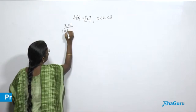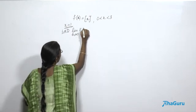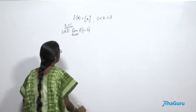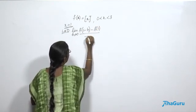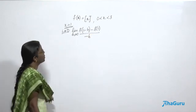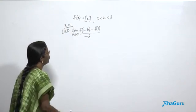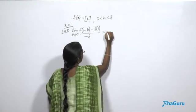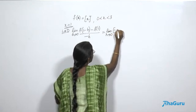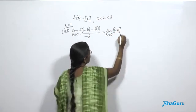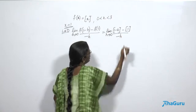We will find out the left derivative. The limit as h tending to 0 of f(1 minus h) minus f(1), divided by minus h. When we substitute, this becomes the greatest integer function of (1 minus h) minus the greatest integer function of 1, divided by minus h.